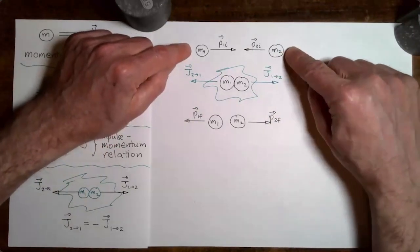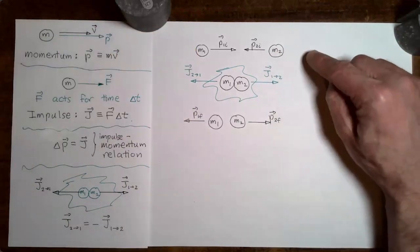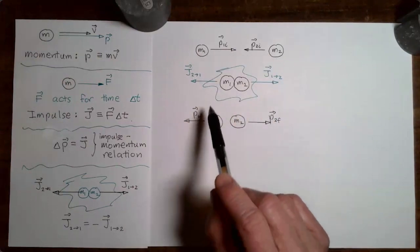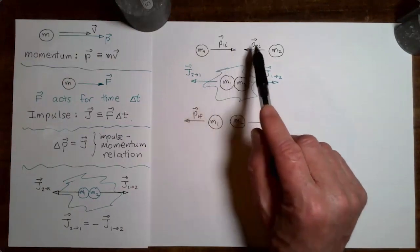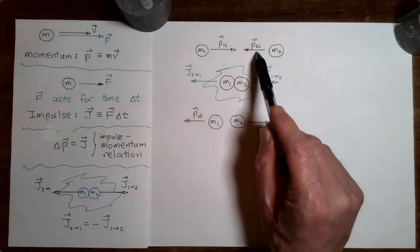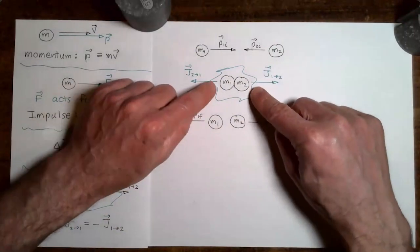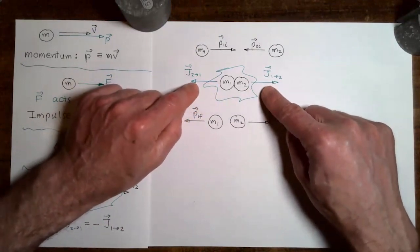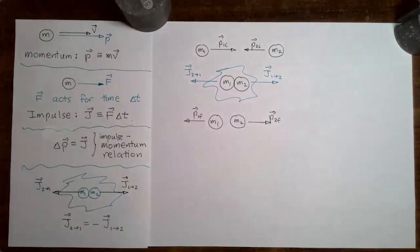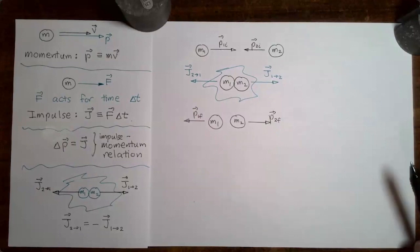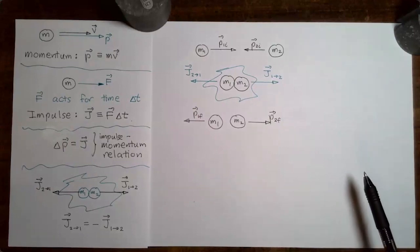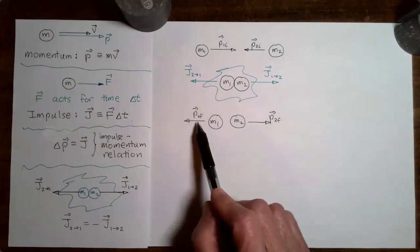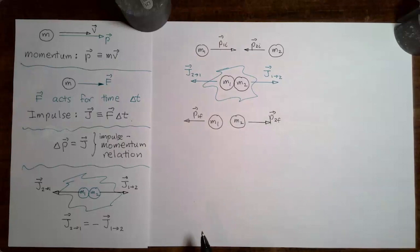Let's say that we have two masses approaching each other and they're going to collide. Before the collision takes place, mass one has momentum P1 initial, and mass two has momentum P2 initial. The masses then collide, and during the collision, each mass delivers an impulse to the other mass. The impulse that each mass receives changes its momentum. So after the collision, mass one has momentum P1 final, and mass two has momentum P2 final.